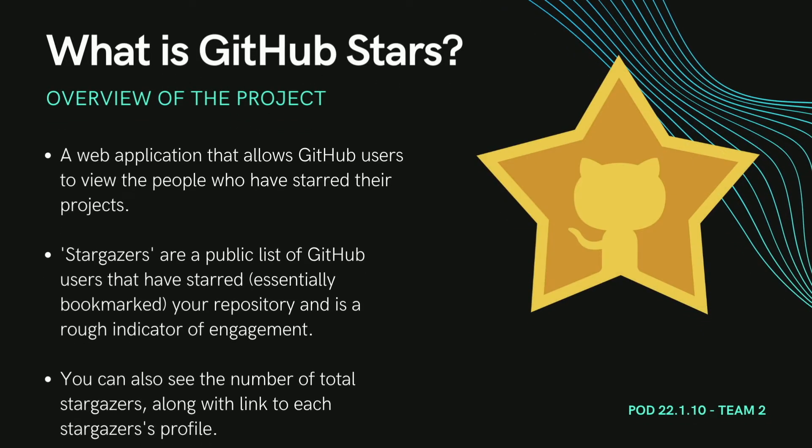We developed a web application called GitHub Stars that allows you to view the number of GitHub users that have starred your project. You can also see the number of total stargazers, along with a link to each stargazer's profile. Stargazers are the public list of GitHub users that have starred — essentially bookmarked — your repository, and it is a rough indicator of engagement. People either want to use your code or at least not forget the link to follow up on it another time. It is a good measure to see how useful or inspiring your project is. We wanted users to get their due appreciation and be able to see everyone who has contributed to their reach by starring the repository.